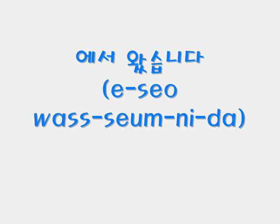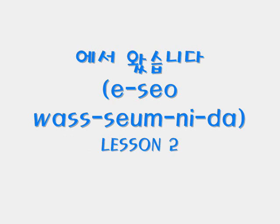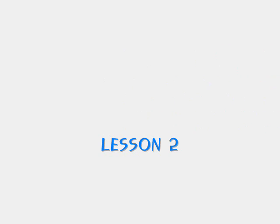Lesson number 2: the use of 에서 왔습니다. 왔습니다 is the past form of 옵니다. 에서 is a particle which means 'from' in English. 에서 왔습니다 means 'came from' in English. Let's have the following examples.